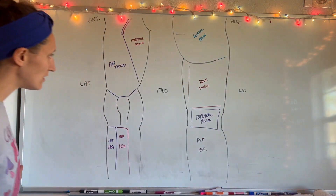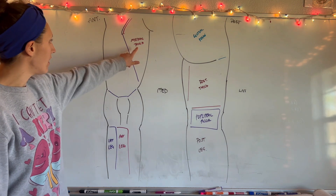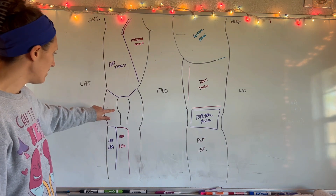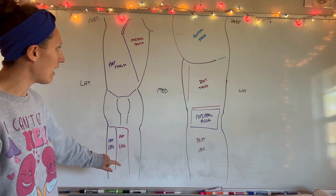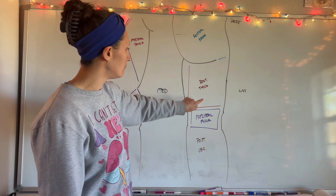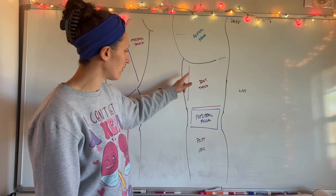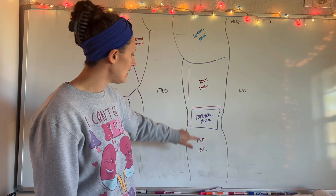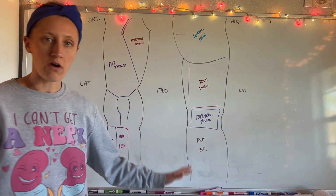We've got our different sections: anterior thigh, medial thigh, knee, lateral leg, and anterior leg on the front side. On the posterior side we have the gluteal region, posterior thigh, a tiny bit of medial thigh, the popliteal fossa — which is the back of your knee — and posterior leg. So those are our areas.